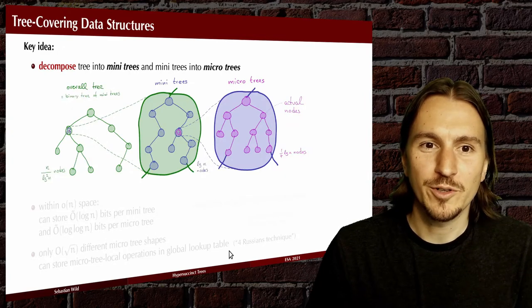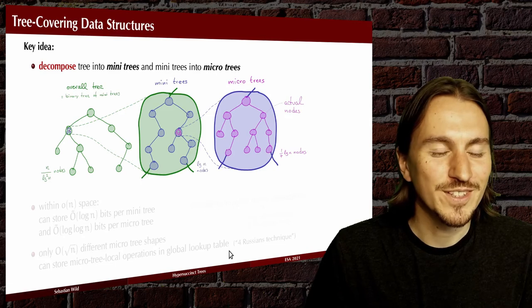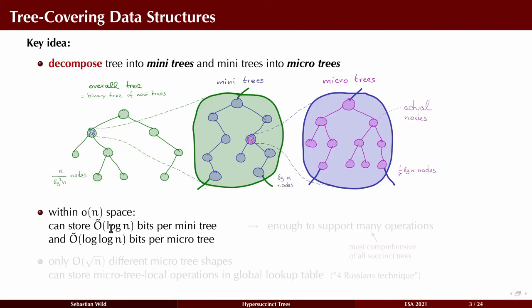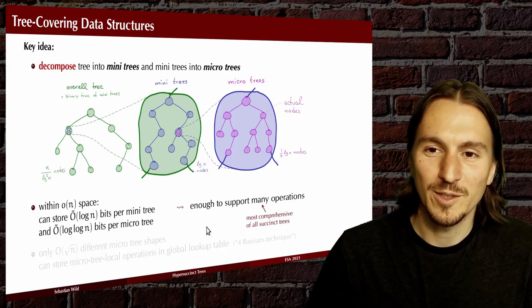Tree covering is one of these approaches to store a tree succinctly. The core idea is to decompose a tree first into mini trees and then the mini trees again into micro trees. The overall tree is represented as a tree of roughly n over log-squared nodes, where each node is a mini tree consisting of roughly log n nodes, and each of those nodes is a micro tree consisting of at most log n divided by four nodes. Within little-o of n extra space, you can afford to store log n bits for each mini tree and log log n bits for each micro tree, which is enough to support all the operations.